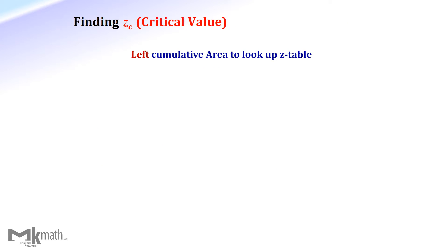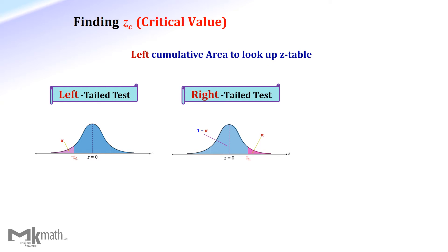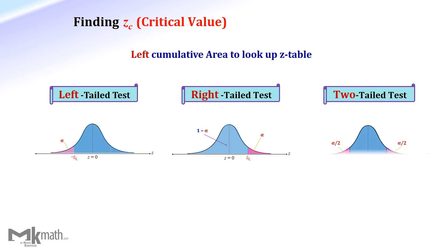In summary, in order to find the z-critical values, we need to find the left cumulative area to look up the z-table. For the left-tailed test, since we have the left area as the significance level, we use alpha directly to find the z-critical value. For the right-tailed test, we subtract the significance level from 1 to get the left cumulative area. Lastly, for the two-tailed test, simply divide the significance level by 2 to get the left area. Once you get the negative critical value, make it positive to have two critical values.